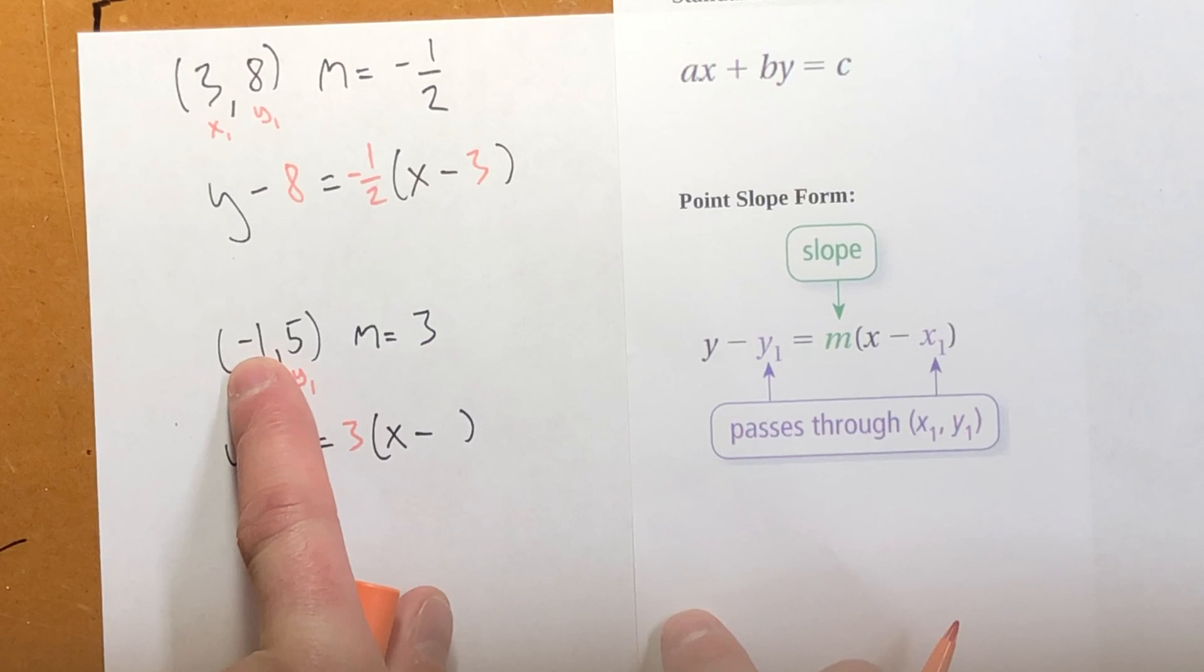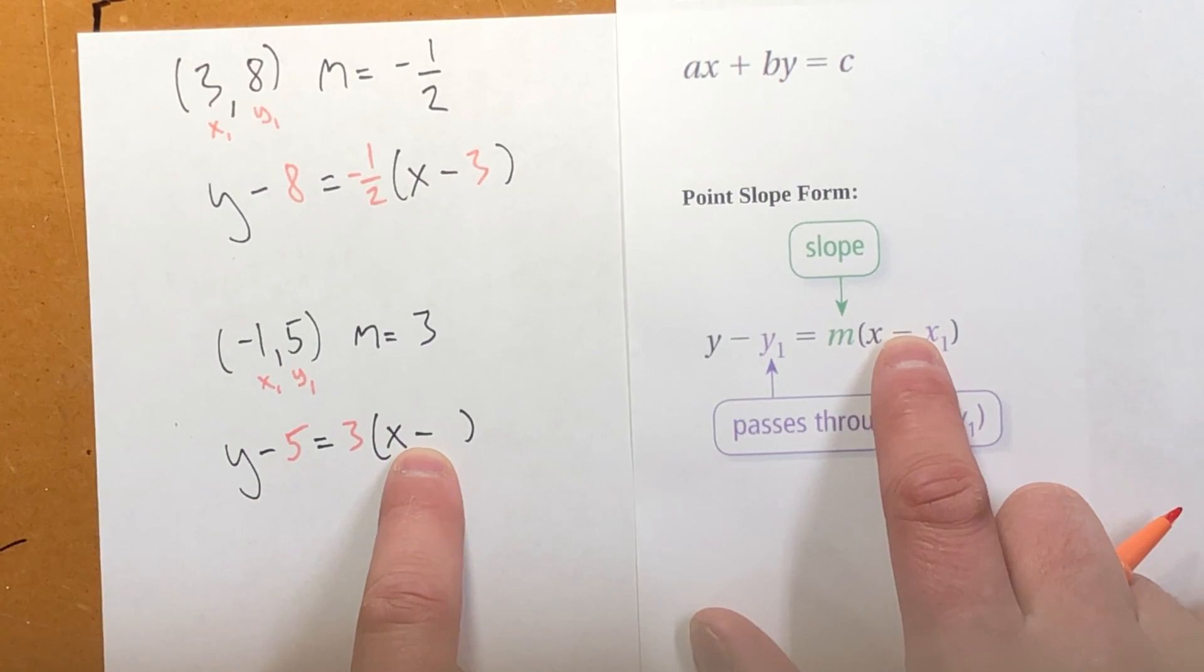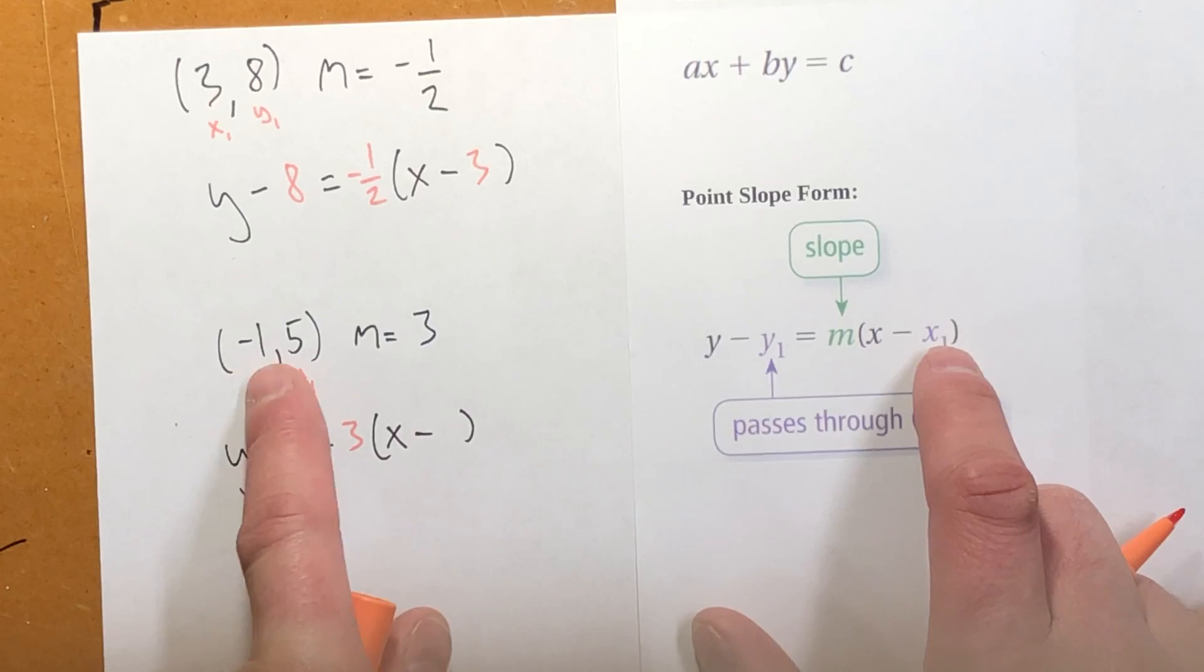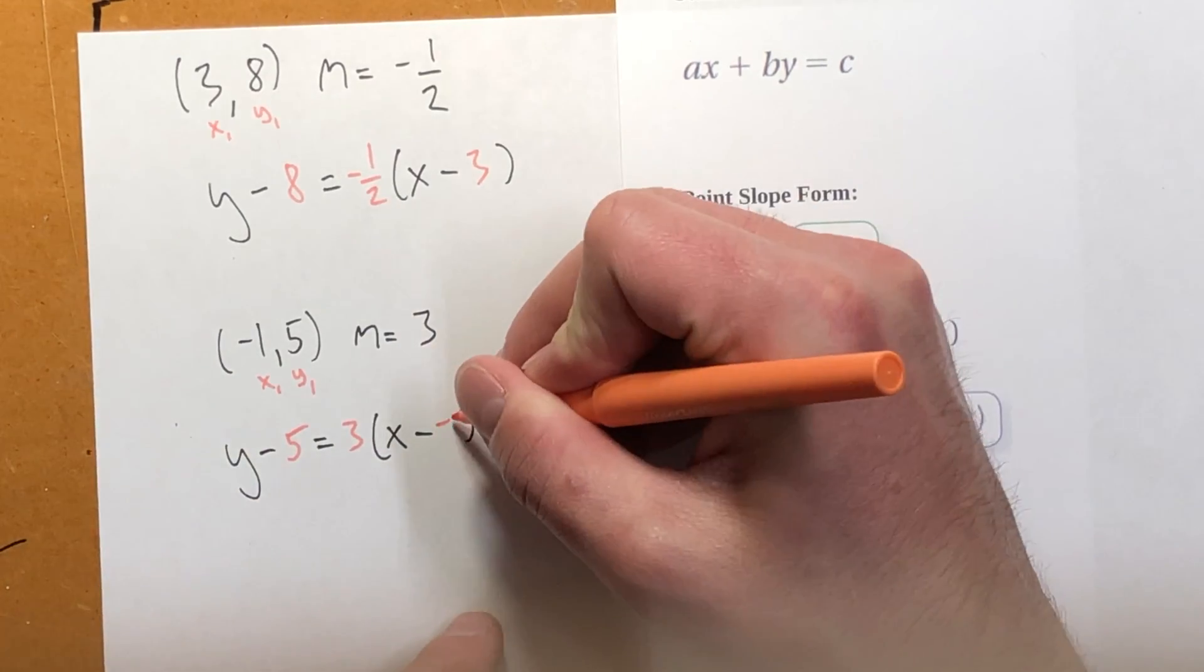Now, make sure you include that negative sign. This subtraction sign is always there. If this is a negative number, I better include it.